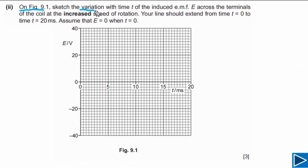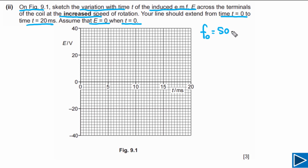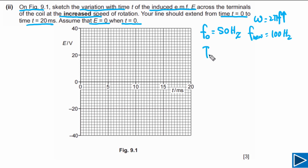For the second part of Part B, we need to sketch the variation of induced EMF with time t at the increased speed of rotation, from t = 0 to t = 20 milliseconds, with E = 0 at t = 0. The initial frequency was 50 Hz. Since angular speed is doubled and ω = 2πf, the frequency also doubles to a new value of 100 Hz. The new time period is T = 1/f_new = 1/100 = 10 milliseconds.